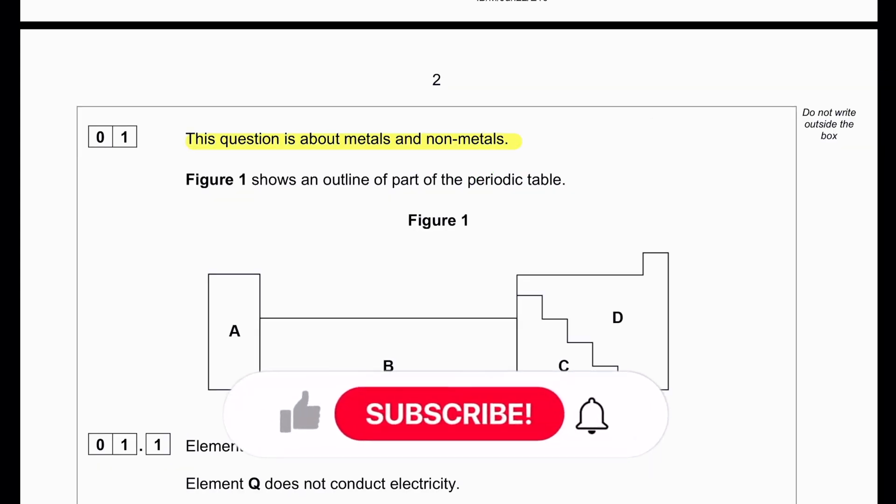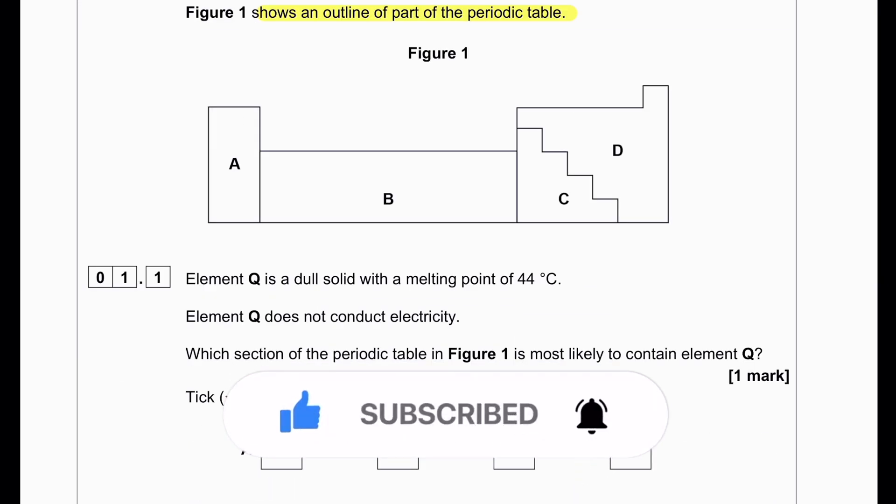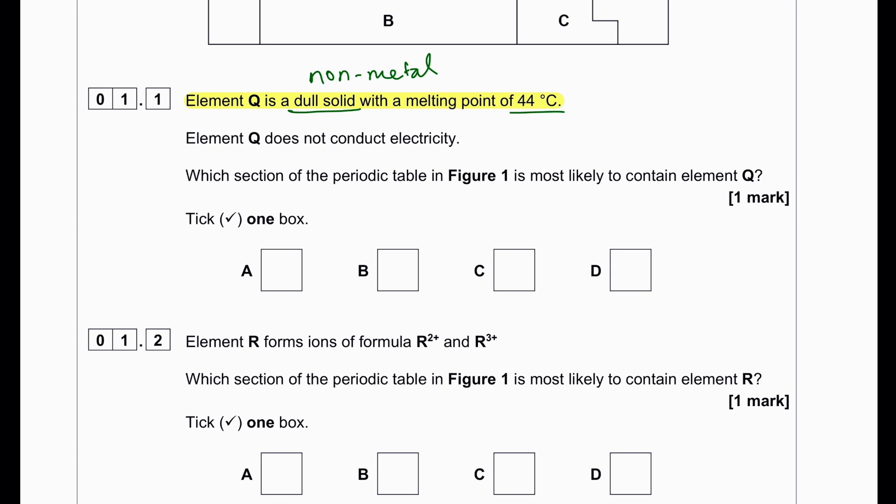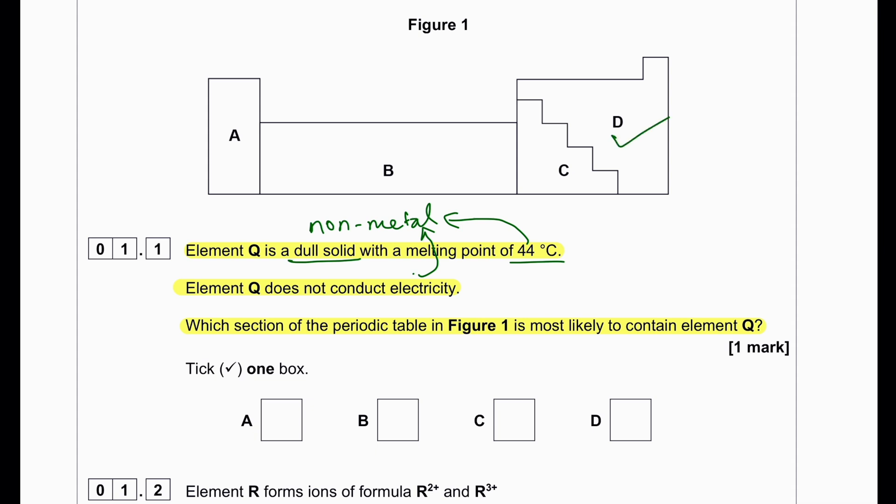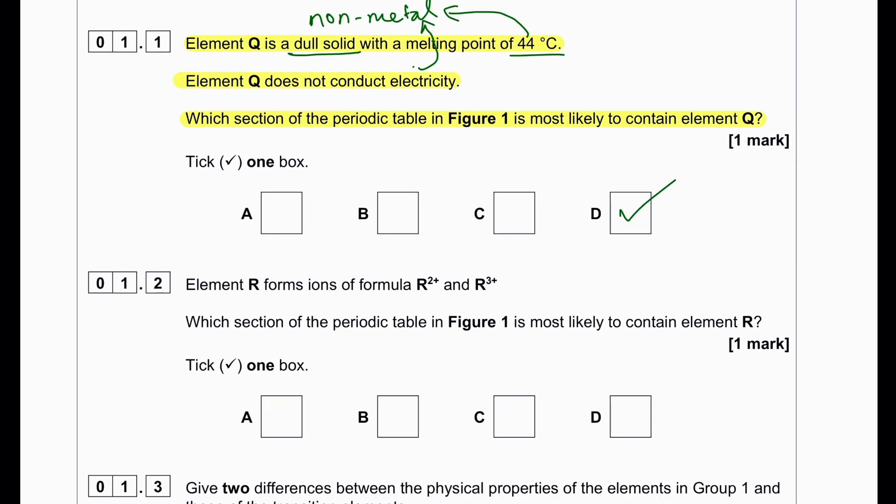This question is about metals and non-metals. Figure 1 shows an outline of the periodic table divided into four different sections. Element Q is a dull solid with melting point of 44 degrees Celsius. A dull solid indicates a non-metal and low melting point also indicates non-metal. Element Q does not conduct electricity, so not conducting electricity further confirms that it is a non-metal. Element Q can be found in the P block, so D will be the answer.